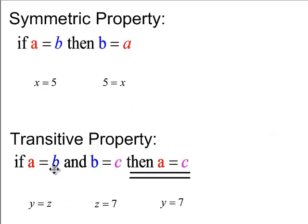If we have A equals B and B equals C, then we can make the jump to A is equal to C. So an example would be if you had y equals z and you were told that z is equal to 7, then you can make the conclusion that y has got to be equal to 7 as well.